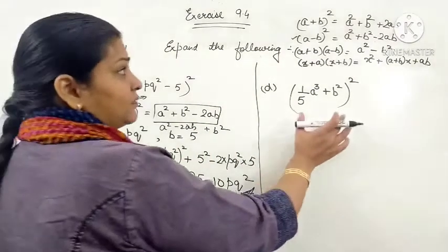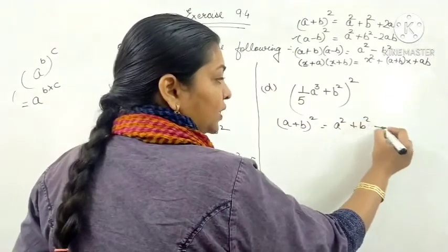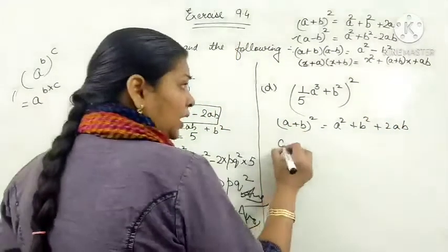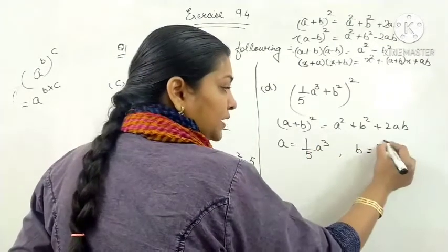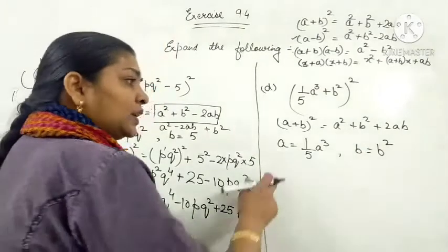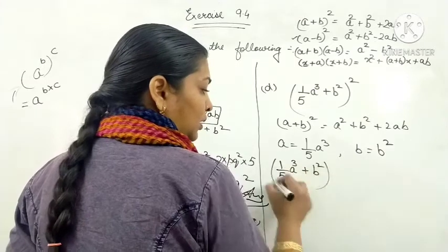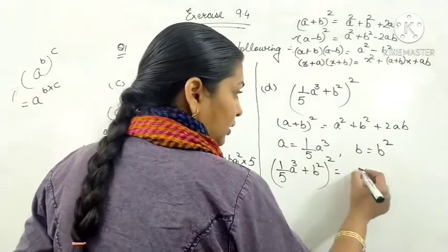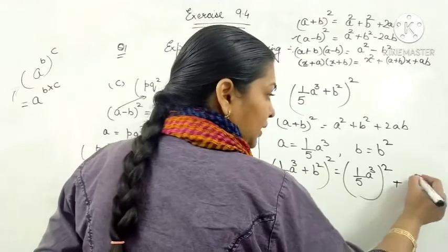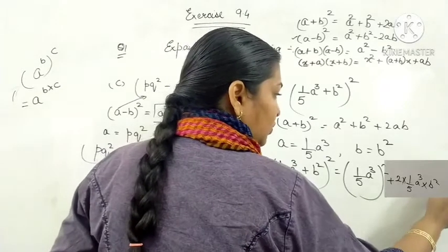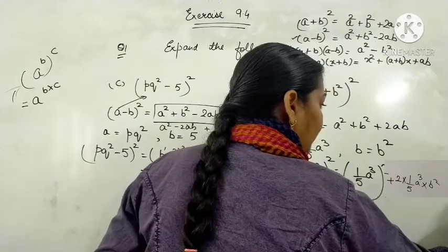Now for part D we will use A plus B whole square: A squared plus B squared plus 2AB. Here A is 1 by 5 A cubed and B is B squared. Substituting the values: 1 by 5 A cubed plus B squared whole square equals 1 by 5 A cubed whole square plus B squared whole square plus 2 into 1 by 5 A cubed into B squared.